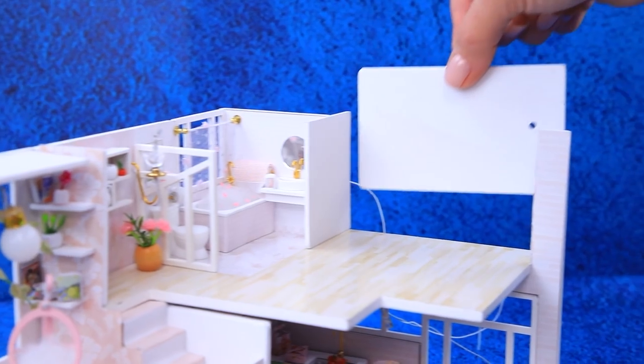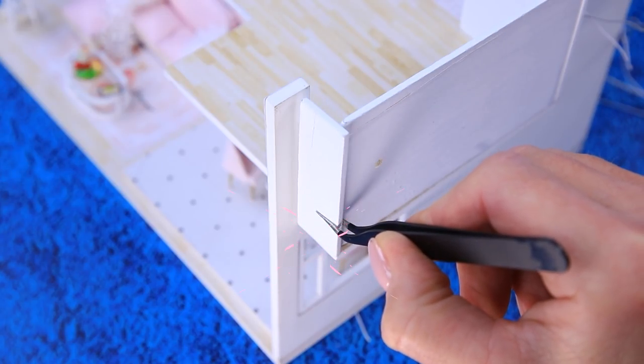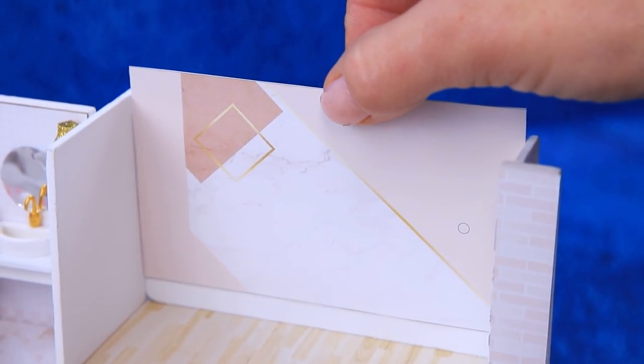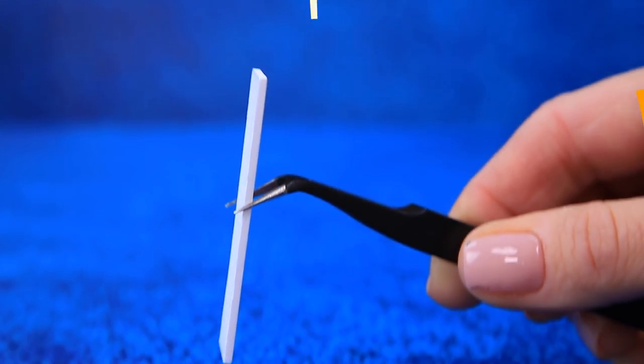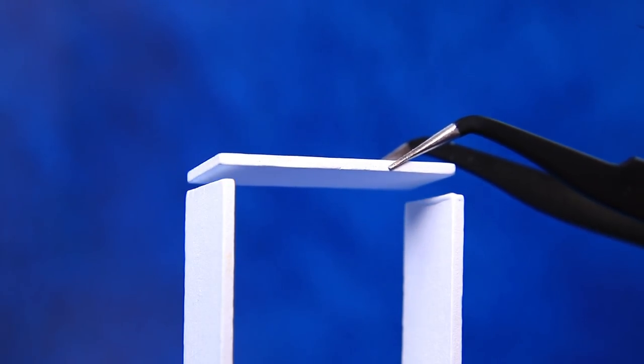The bath zone is separated with a wall. Start sticking the wallpaper on. Now let's make a wardrobe out of cardboard details.